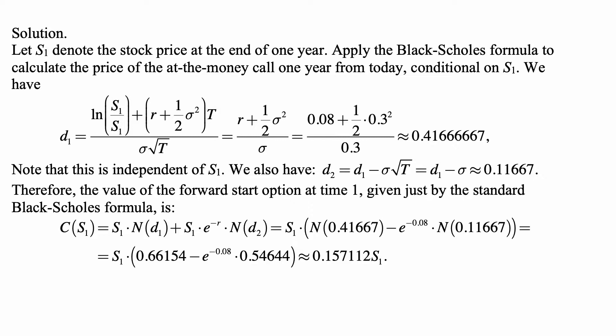We also have d2 equal to d1 minus sigma square root of t, and that's the same as d1 minus sigma, so approximately 0.11667. Therefore, the value of the forward start option at time one, given just by the standard Black-Scholes formula, would be S1 times N of d1 plus S1 times e to the minus r times N of d2. We plug in those values of d1 and d2, and we factor S1 out. This becomes approximately 0.157112 times S1.